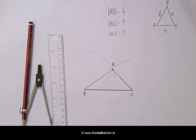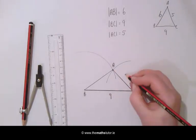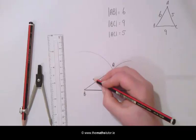And here we can see we have our triangle giving our three sides. BC which was 9, AC which was 5, and AB which was 6.